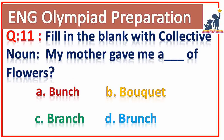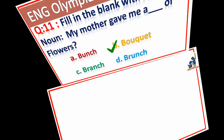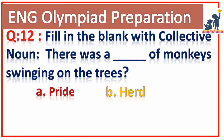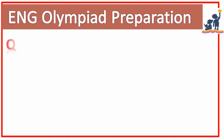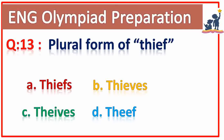Question number eleven: fill in the blank with a collective noun. My mother gave me a dash of flowers. Bouquet. Yes, good. Question number twelve: fill in the blank with a collective noun. There was a dash of monkeys swinging on the trees. Troop. Very good. Question number thirteen: plural form of thief. Thieves — option B. Yes, good.